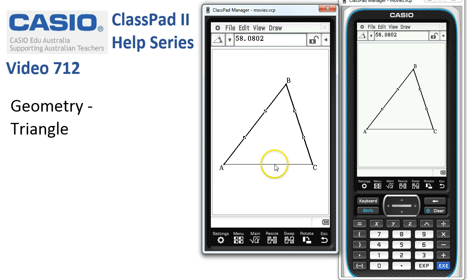If we bring in a third side, you'll notice that it's given us the area of the triangle, and also there is an option to determine the perimeter.